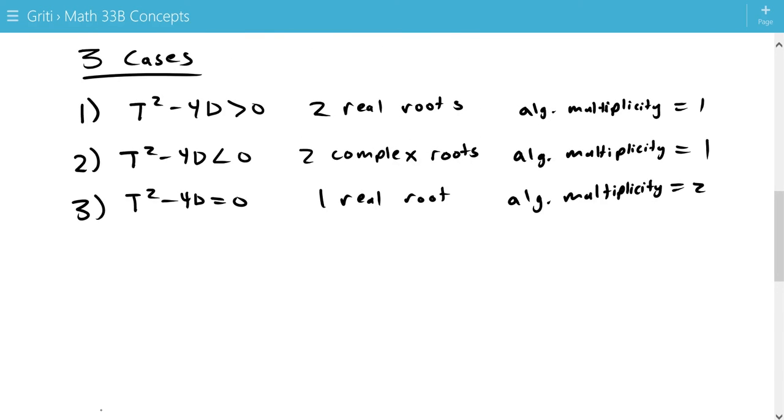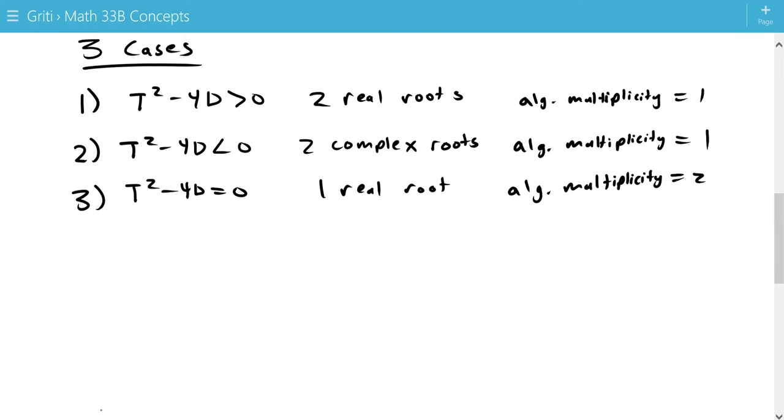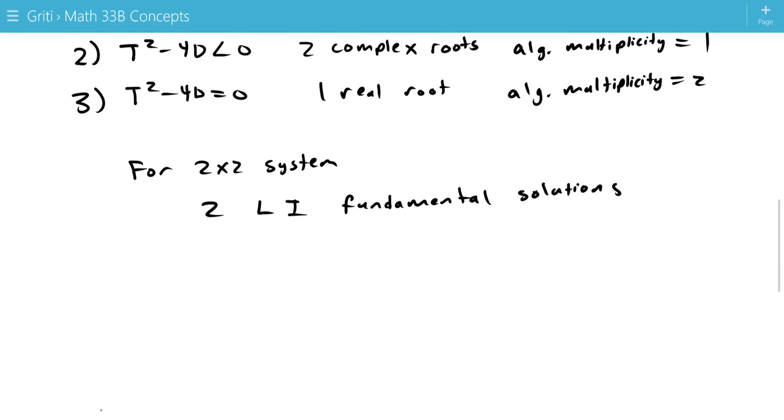So, when finding our solutions, we need, for a 2 by 2 system, we need two linearly independent fundamental solutions. And these fundamental solutions we'll call Y1 and Y2.